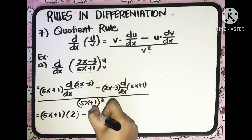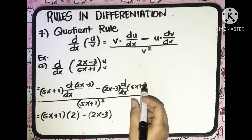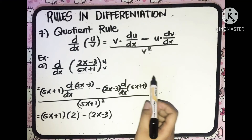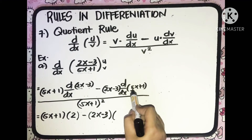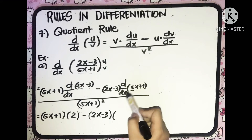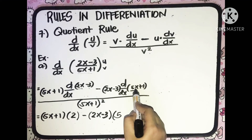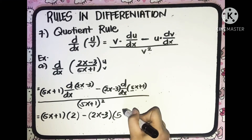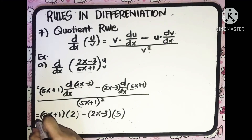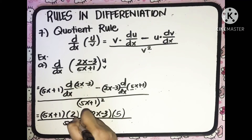just copy 2x minus 3. And then the derivative of 5x plus 1: the derivative of 5x is equal to 5, and the derivative of x is equal to 1, plus the derivative of the constant 1, which is 0. So the derivative of 5x plus 1 with respect to x is equal to 5. Don't forget the denominator, 5x plus 1, quantity squared.